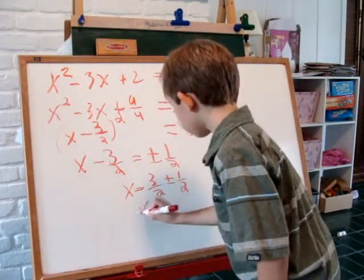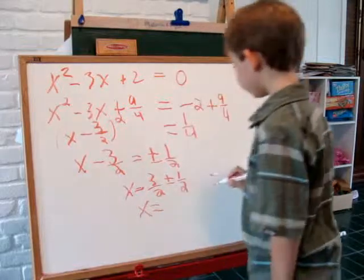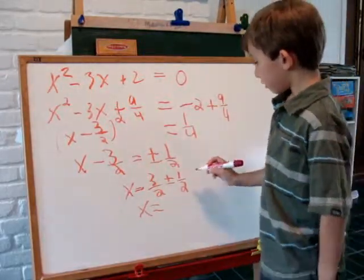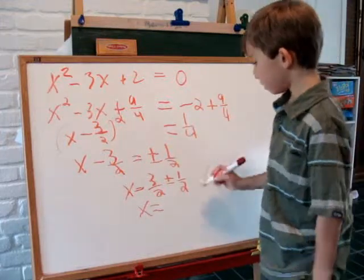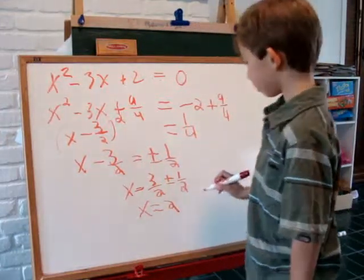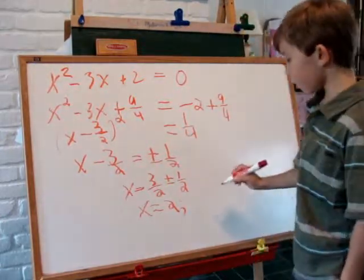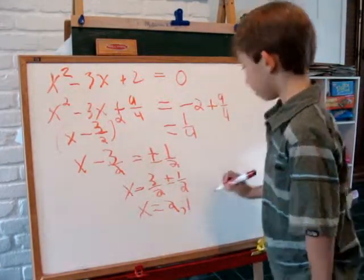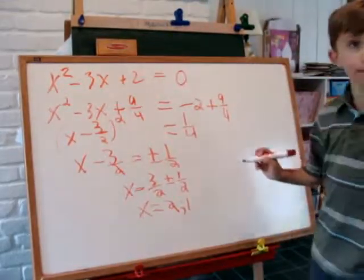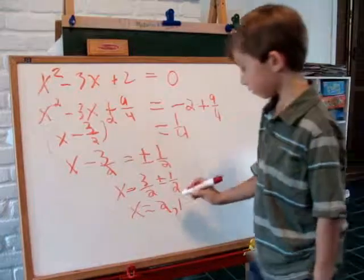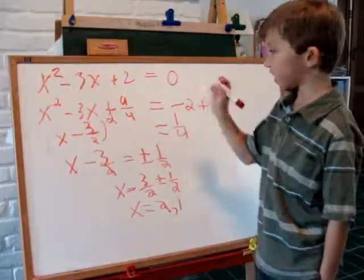x equals 3 halves plus 1 half, which is 4 halves. 4 halves reduces to 2. Or 3 halves minus 1 half, which is 1. Those were the same answers we got as factoring. Thank you.